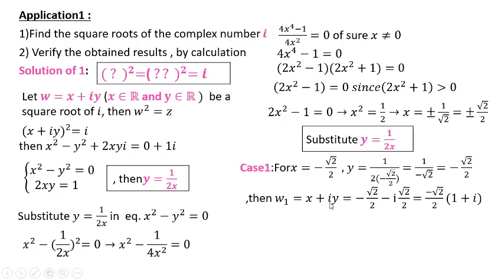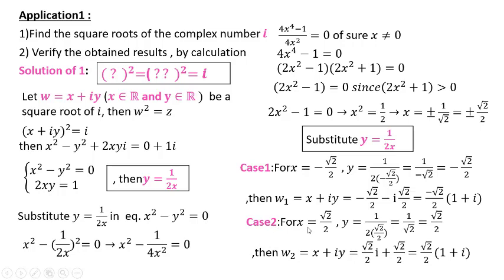As you see, x has two values, but x and y are related by the relation y = 1/(2x), so to each value of x there exists a unique value of y. Case 1: for x = −√2/2, substitute to get the corresponding y, and so w₁ = −√2/2 · (1 + i). Case 2: for x = √2/2, then y = √2/2, and we name the second square root w₂ = √2/2 · (1 + i). The two square roots of i are w₁ and w₂.